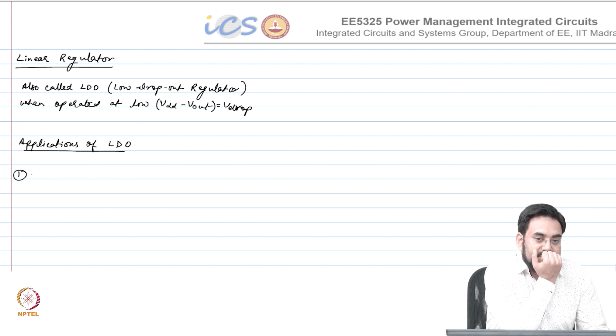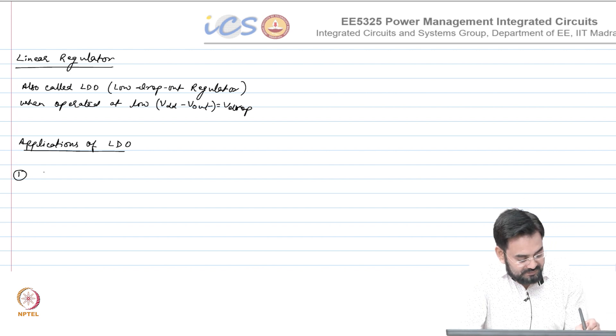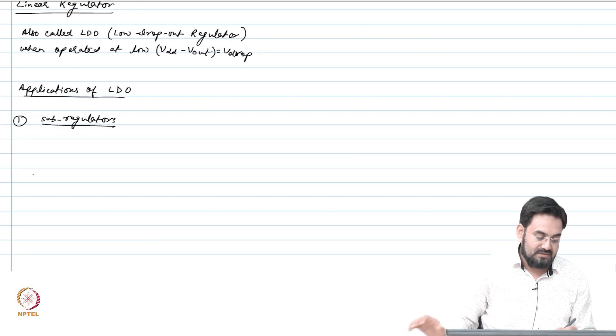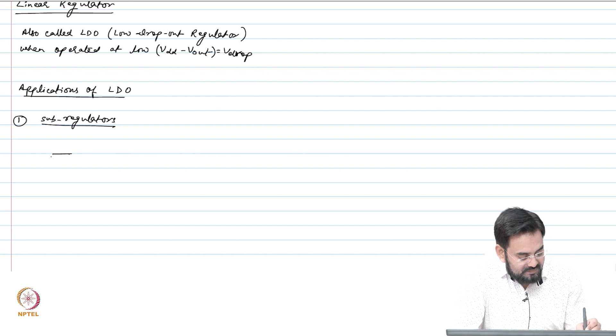First application: sub-regulators. You have your DC to DC converter or switching regulator. Let's say this guy is 3.6 volt, you regulate at 1.25 volt.